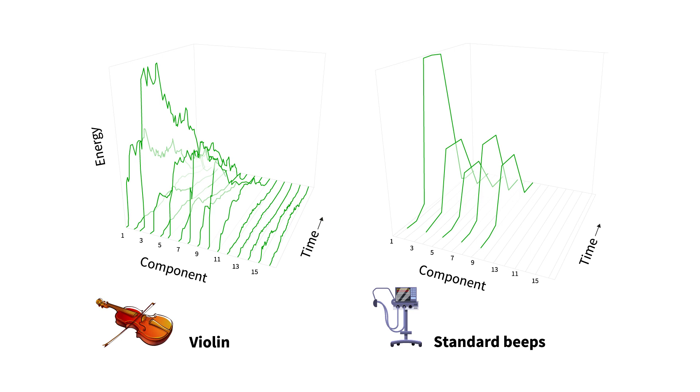Consider the individual components of both complex music sounds and standard machine beeps. This type of 3D representation illustrates each component or harmonic on the horizontal or x-axis. Additionally, it shows the way each component's energy, vertical or y-axis, changes over time, the z-axis.